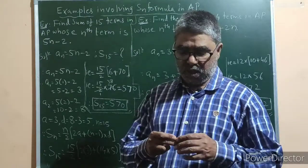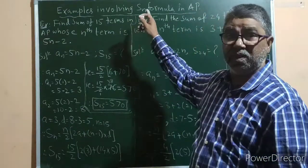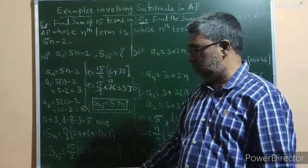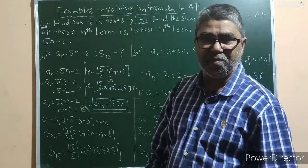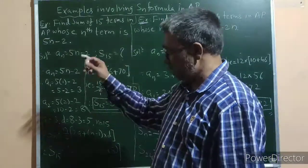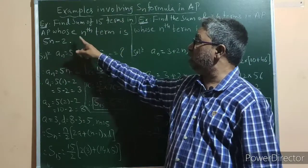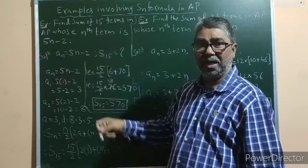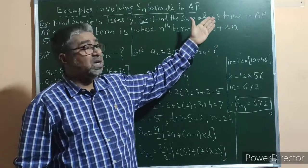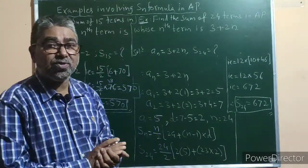We are solving examples involving the sum of n terms formula: Sn = n/2 × (2a + (n-1)d). We solved about 5 to 6 examples in our previous video. In this video, let us solve a few more examples of a different type. The first example is: find the sum of 15 terms of an AP whose nth term is 5n minus 2. The second example is: find the sum of the first 24 terms of an AP whose nth term is 3 plus 2n. Both examples are of the same type.